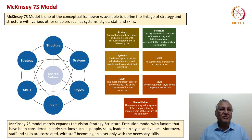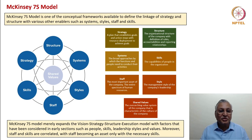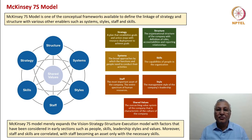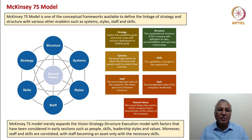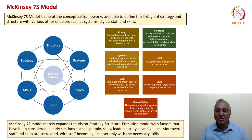I wish to present the McKinsey 7S model as one of the conceptual frameworks available to define the linkages amongst various enablers. We have structure, systems, styles, staff and skills — all within the canopy of strategy and conforming to shared values. McKinsey suggests that strategy is a plan that establishes goals and action steps with resource deployment to achieve goals. Organizational structure is the definition of roles, accountability and reporting relationships. Systems are the broad approaches by which functions and people conduct their activities. Skills are the capabilities of people in the organization. Staff, the most important asset, comprises the entire spectrum of human resources. Style is the management style of the company's leadership. And shared values are the overarching value system characteristic of the culture of the company.